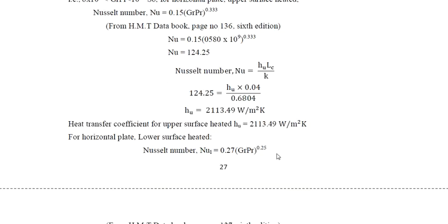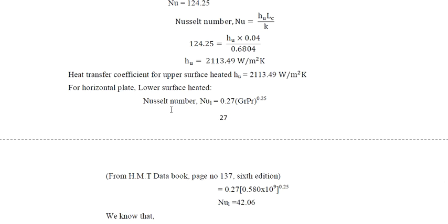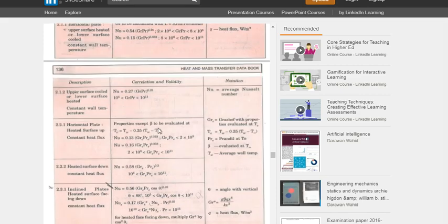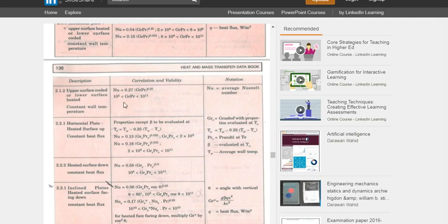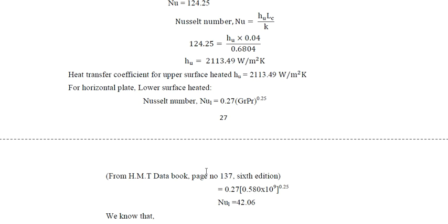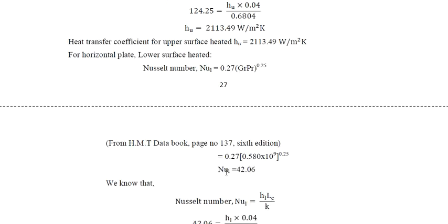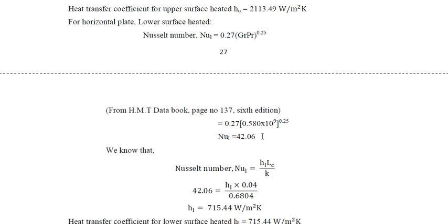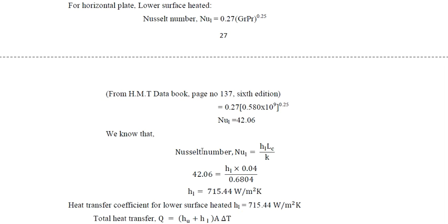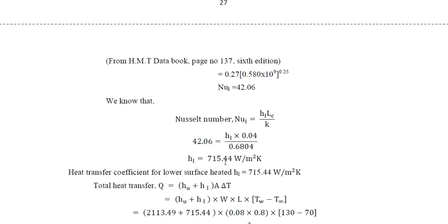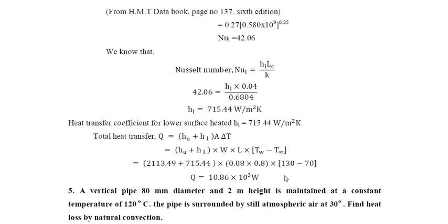For the lower surface heated (or upper surface cooled) condition, from page 137 of the Kodandrama book, for GrPr between 10⁵ and 10¹¹, the Nusselt number is: Nu = 0.27 (GrPr)^0.25. Substituting the GrPr value, we get Nu₁ = h₁ × L_c / k, giving heat transfer coefficient for the lower surface h₁ = 715.44 W/m²·K.